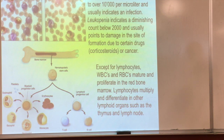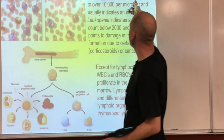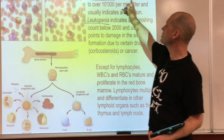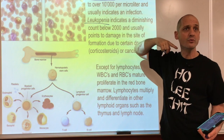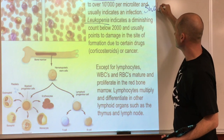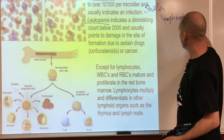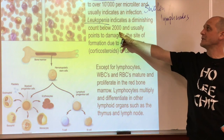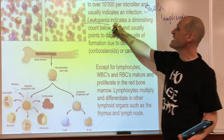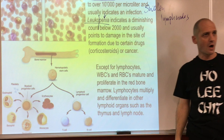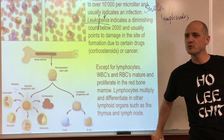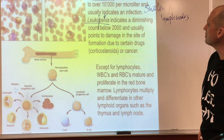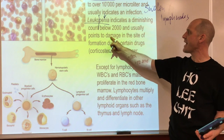Leukocytosis is an increase of white blood cells over 10,000 per microliter, which usually indicates an infection - swollen lymph nodes. Leukopenia means going below 2,000, meaning we don't have enough white blood cells. The suffix '-penia' means diminished - like osteopenia, which means diminished bone density before osteoporosis. When '-penia' appears, it usually means damage to the site of formation.